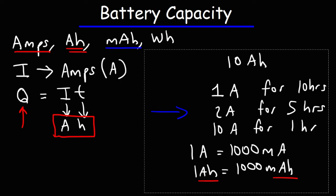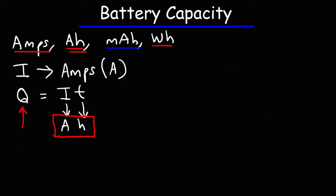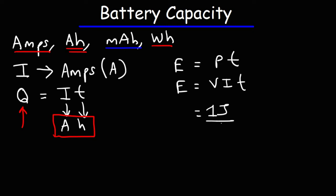Now the last one — the watt hour — is a little different. Energy is equal to power multiplied by time, and electric power is voltage times current. Let's talk about how the units work. 1 volt is equal to 1 joule per 1 coulomb of charge, and 1 coulomb is equal to 1 amp times 1 second.